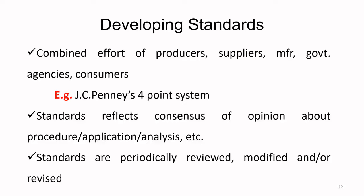Standards are periodically reviewed, modified and revised. For example, 50 years ago 40 km/h was considered high velocity, but today it is very slow. When motorbikes had a top speed of 40 km/h, helmets needed far less strength. Today, with top speeds of 120–140 km/h, the helmet required in an accident must be far stronger. Therefore, the standard for a good quality helmet is not the same as it was 50 years ago — standards must be reviewed, modified and revised.